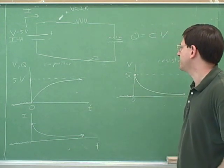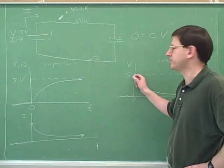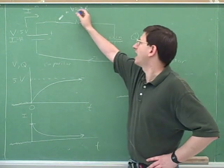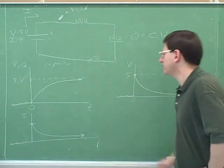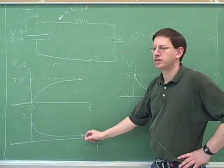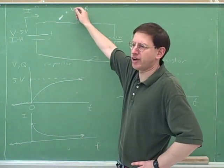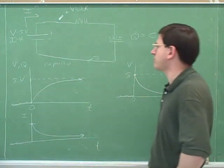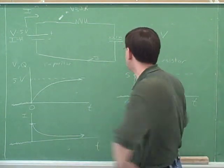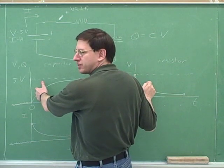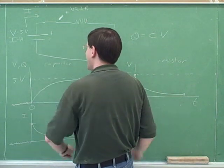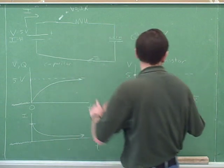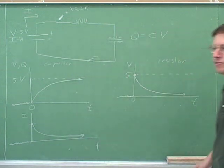Originally, when the battery is sending a high current, there's a big voltage drop on the resistor because I is proportional to V. But eventually there's no current, and when there's no current, there's no voltage drop across the resistor — that goes to zero. Where did the voltage drop go? It went to the capacitor. These two things have to add up to five, so when the resistor voltage is low, the capacitor voltage is high.